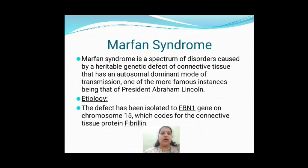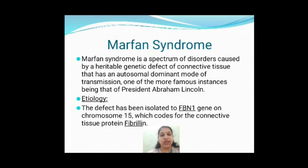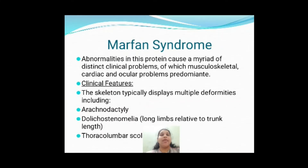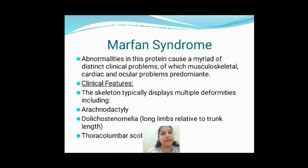The etiology of Marfan syndrome involves a defect in the fibrillin gene — the FBN1 gene. Fibrillin is a protein seen in elastic fibers, which are present in connective tissue. In Marfan syndrome, three major systems will be affected: musculoskeletal, cardiac, and ocular.